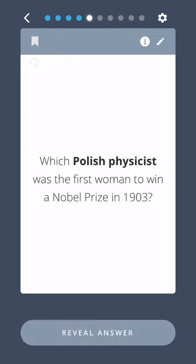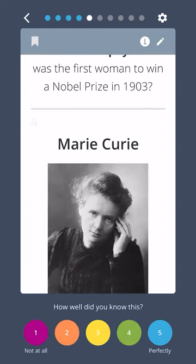Which Polish physicist was the first woman to win a Nobel Prize in 1903? Marie Curie.